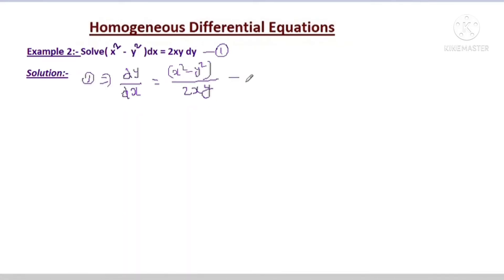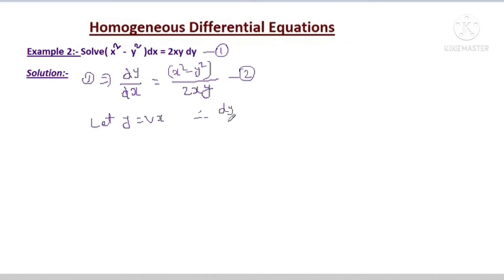Let us call the rewritten equation as equation 2. Since the given equation is a homogeneous equation, let y = vx. We do the variable substitution. Therefore, dy by dx is equal to v plus x times dv by dx.